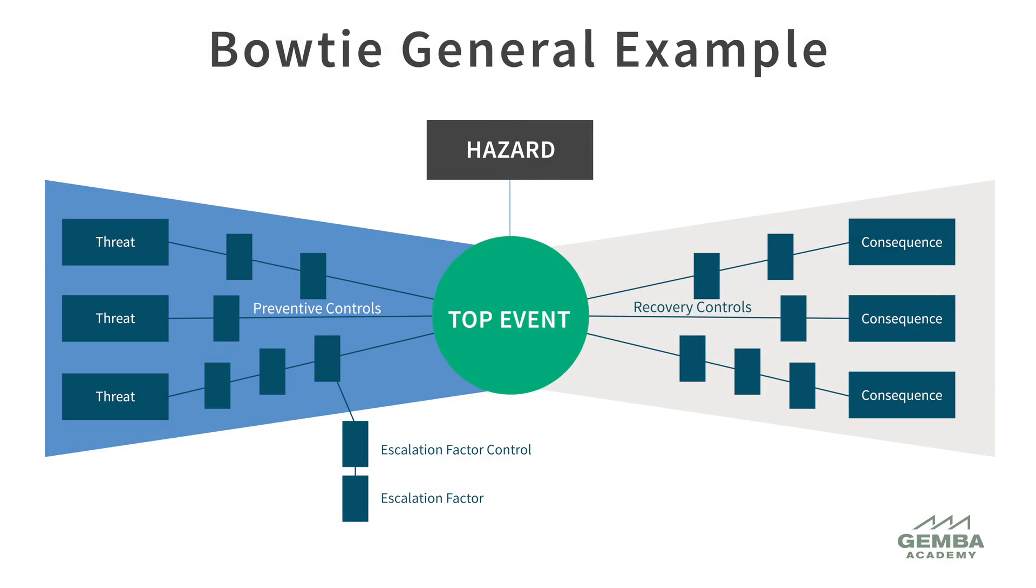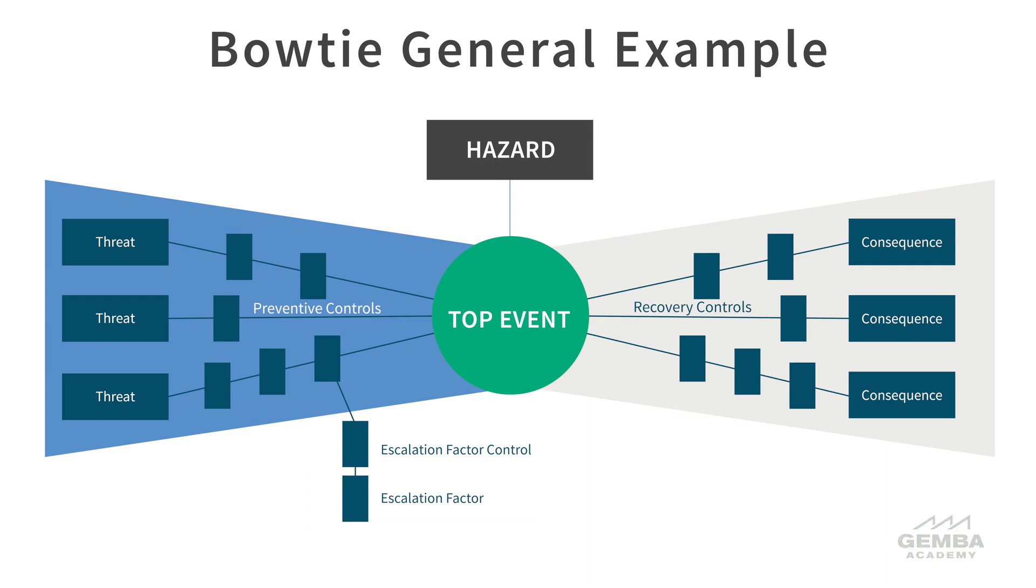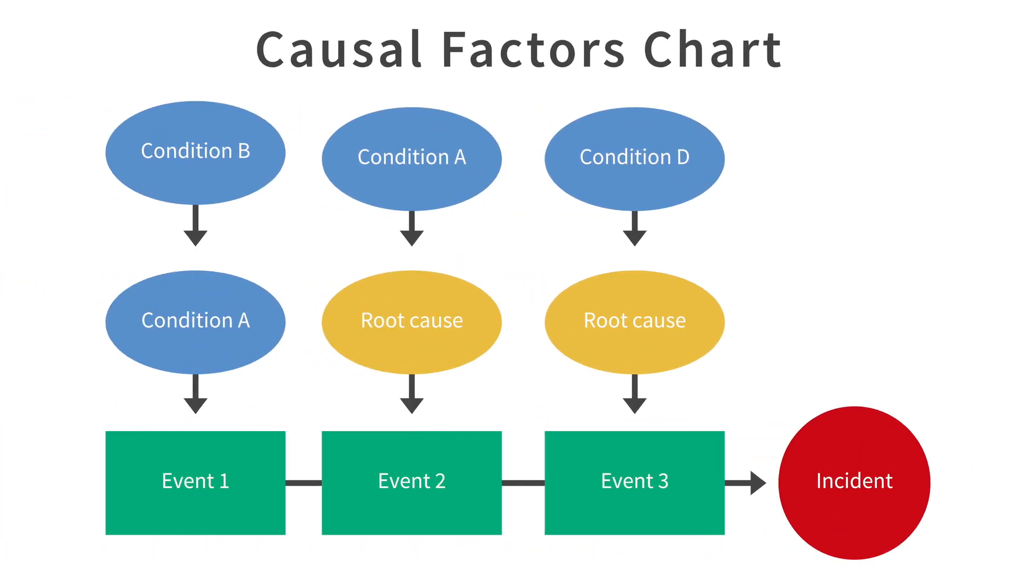The bowtie diagram also shows the pathway between the controls and the escalation factors. However, in causal factors charting, the emphasis is placed on the incidents that have already occurred and only examines one pathway to a potential hazard.